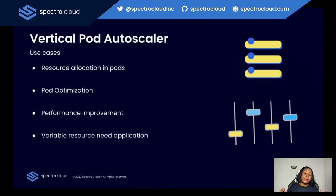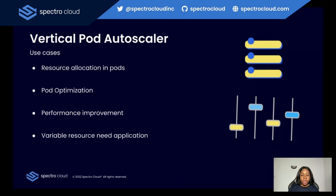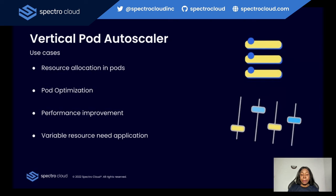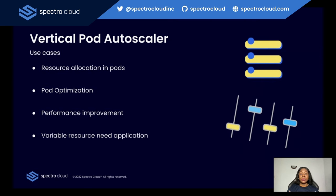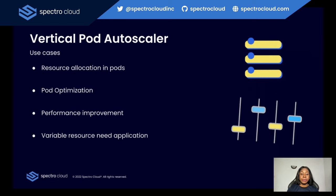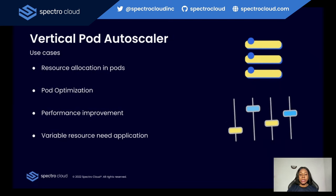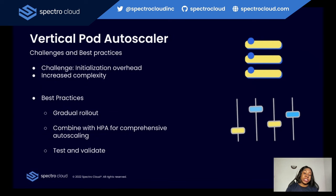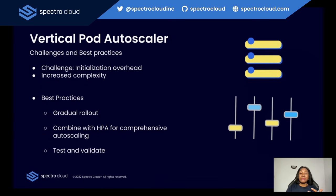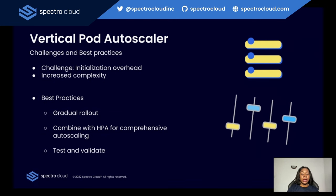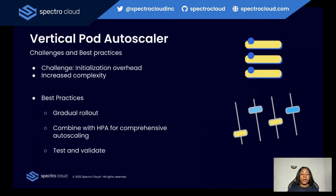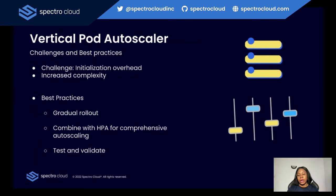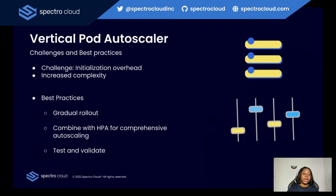Some of the places where VPA can be applied include fine-tuning resource allocation in pods and optimizing pod resource usage over time. Another place where it comes in handy is when you're trying to enhance performance for memory-bound pods or applications with variable resource needs. It also comes with its own challenges — it can take time to initialize because it has to look at historical data to make decisions, and it is more complex to set up than HPA. Best practices include rolling it out gradually and testing in test environments before rolling it out in production.